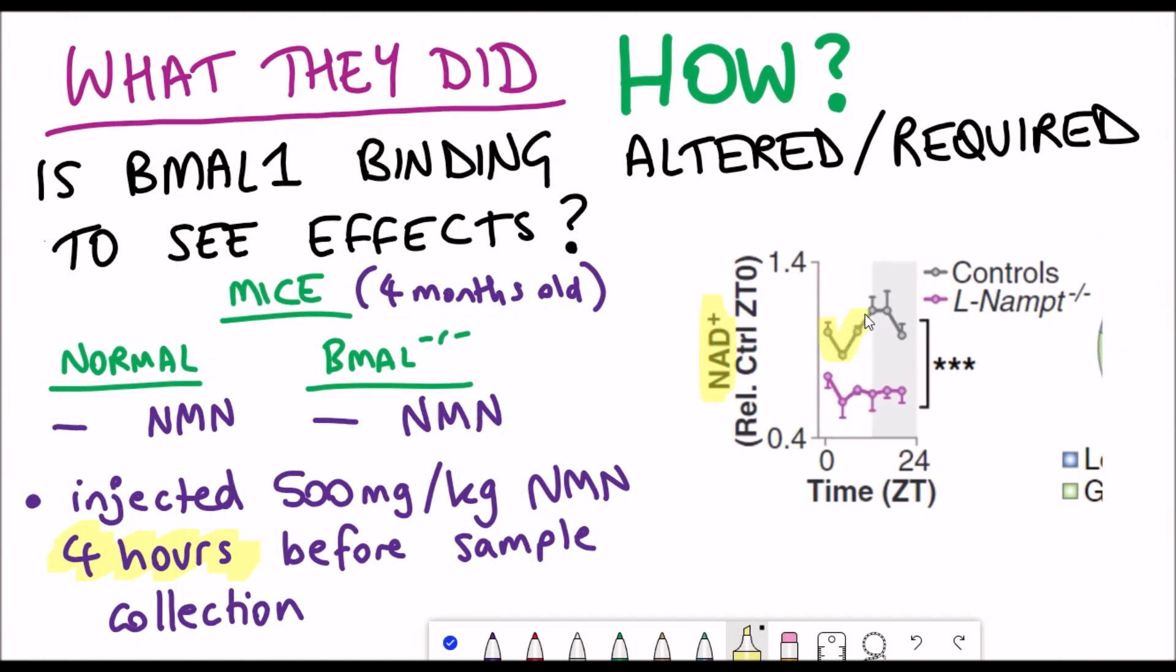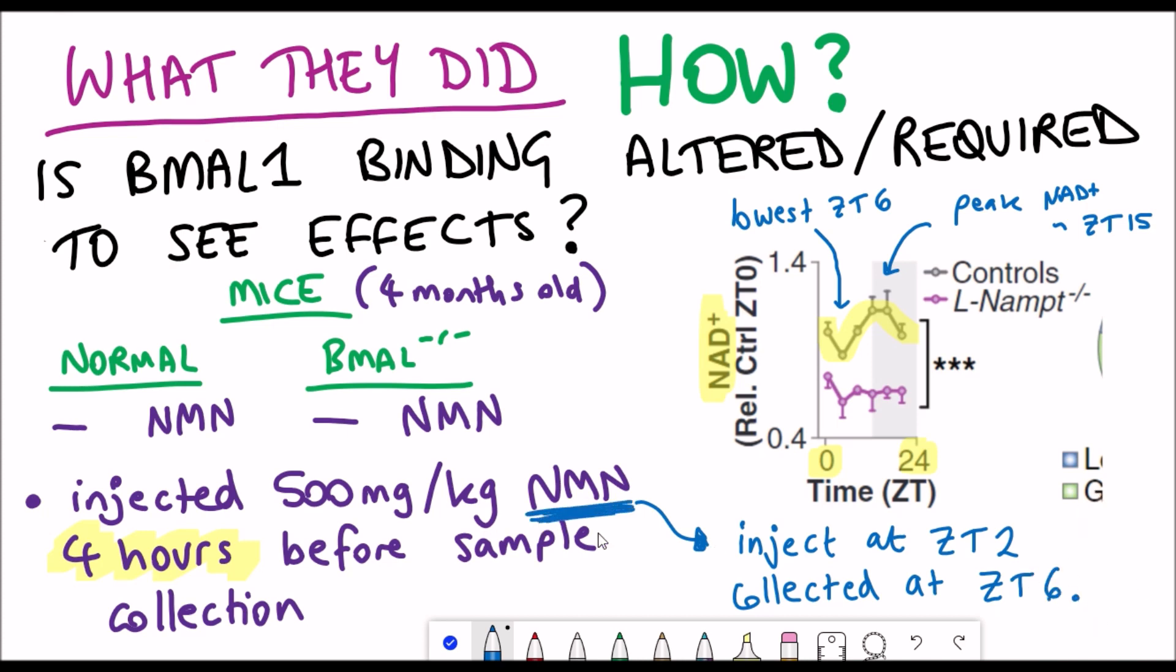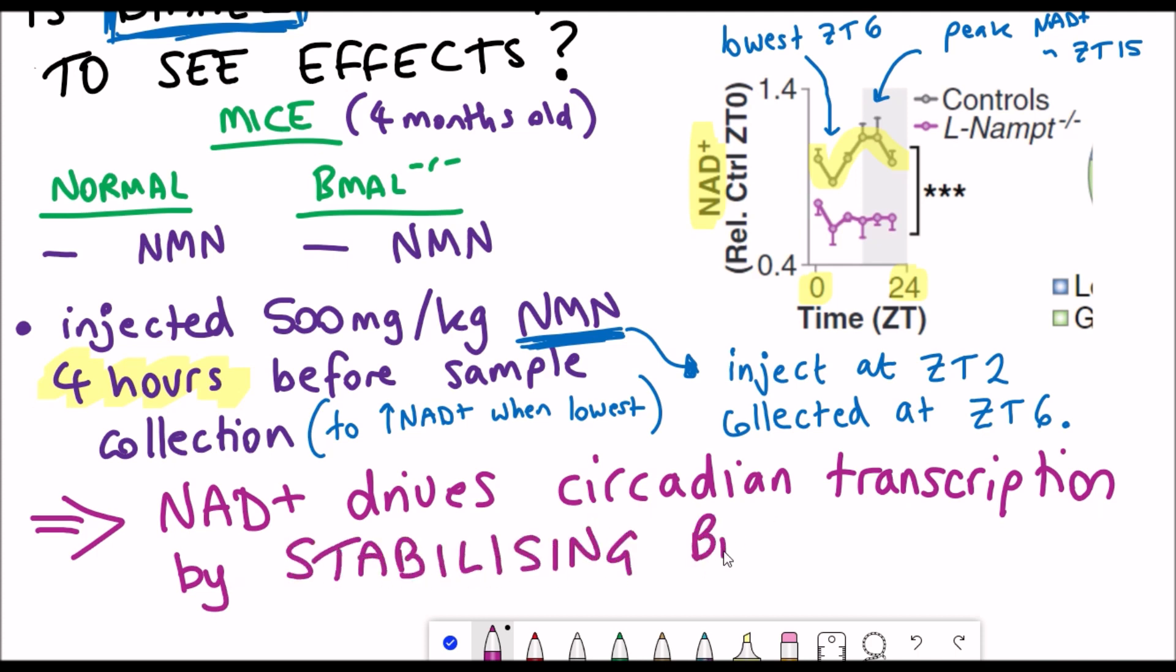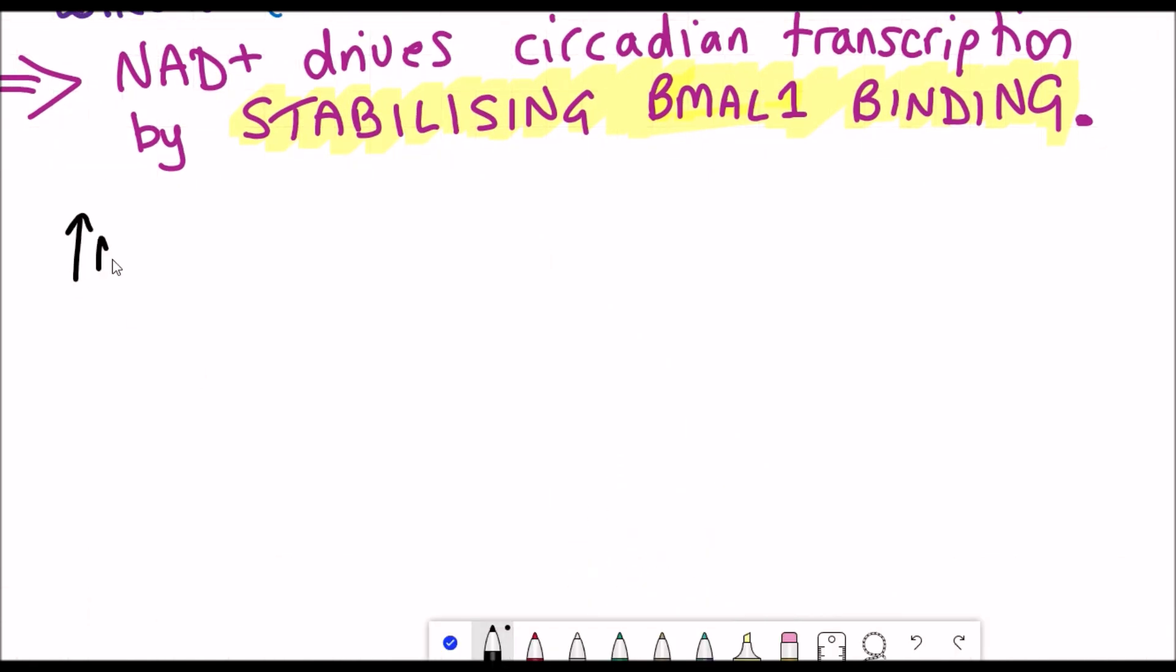Because this time it was an acute response, they wanted to apply the NMN such that it could increase NAD+ when it's at its lowest, which is at a zeitgeber time of six. Zeitgeber time six also corresponds with the highest activity levels of BMAL1. They injected them with NMN four hours before they collected the samples, so they did this at a zeitgeber time of two, and then collected the samples at zeitgeber time six. Once they had their samples, they examined BMAL1 binding in each case, and they saw that NAD+ drives circadian transcription by stabilizing BMAL1 binding to DNA. This can help us start trying to understand why we see such dramatic changes in the transcriptome because we're actually altering the binding of one of the key proteins involved in the process.